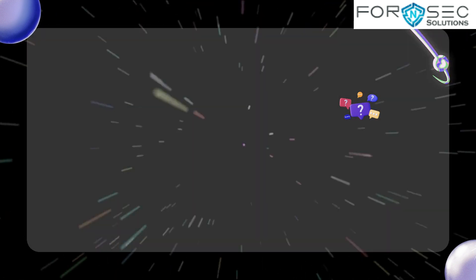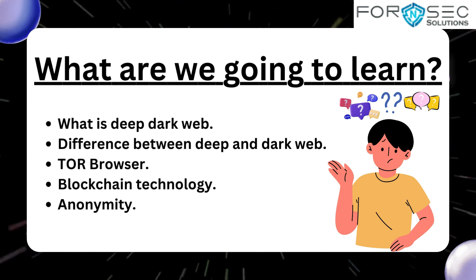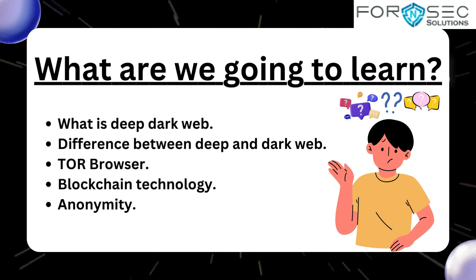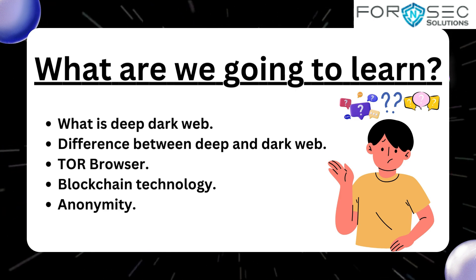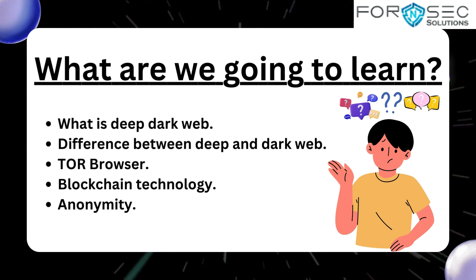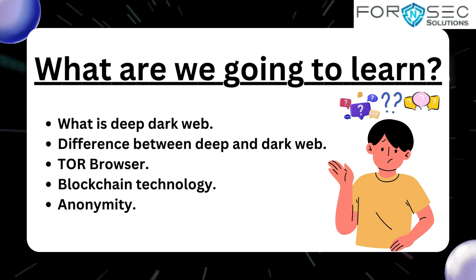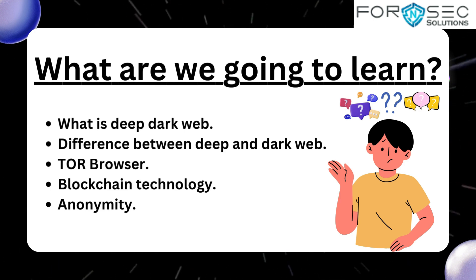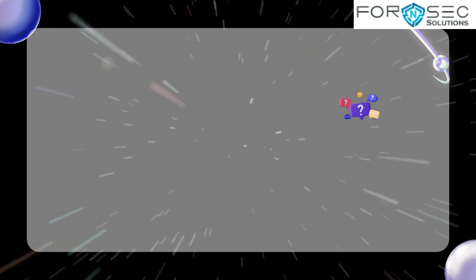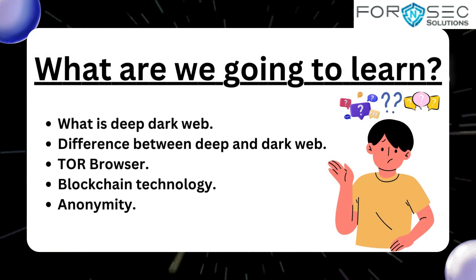We will be discussing the basic difference between both the webs and also the contents of each individual web. For example, the deep web mainly contains records such as health records — we can say that the deep web is essentially the document section of the internet. Again, this is just an overview and we will be discussing in detail in upcoming lectures.